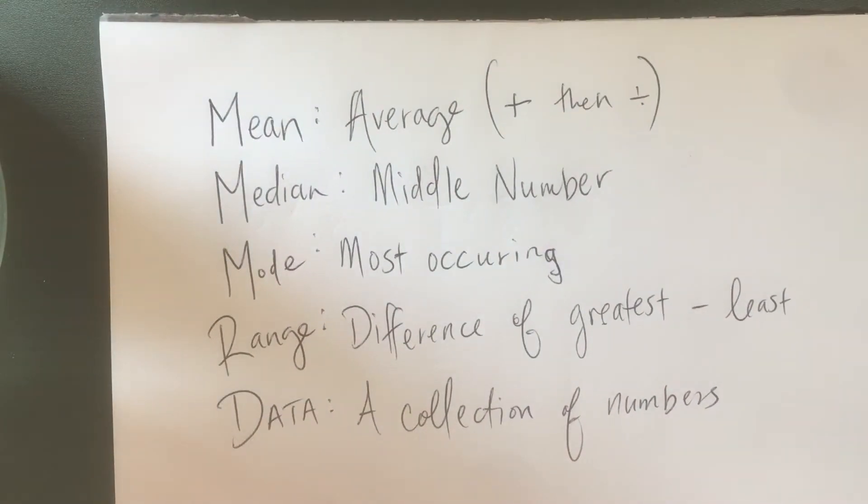It could be anything. Suppose you're taking data on how many people ate three meals a day during quarantine - some people ate four meals, some people five meals. They represent something, okay? And then we have...